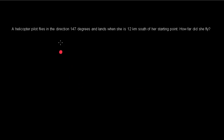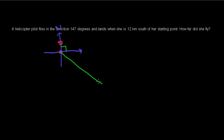Let's call the starting point S. At my starting point, I draw my north, east, south lines. Now we're going in a direction of 147 degrees — 90 degrees gets us to east, so I'm going further down. Let's put H for my helicopter. That's 90 degrees to east, so the remaining angle is 57 degrees inside that area, because 90 plus 57 makes 147.